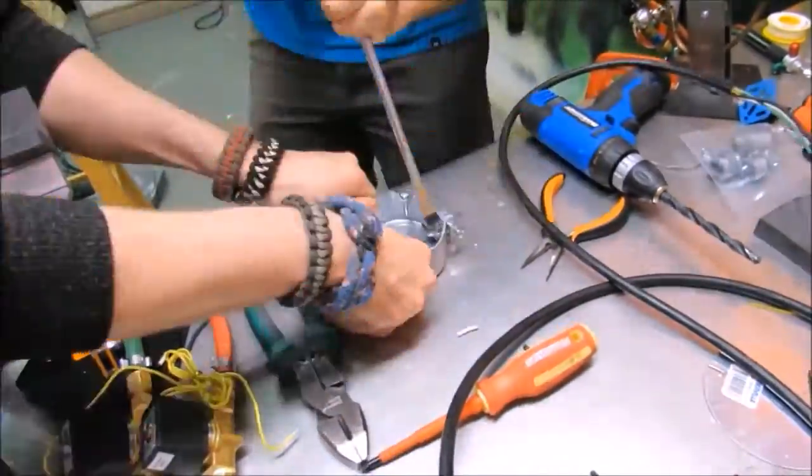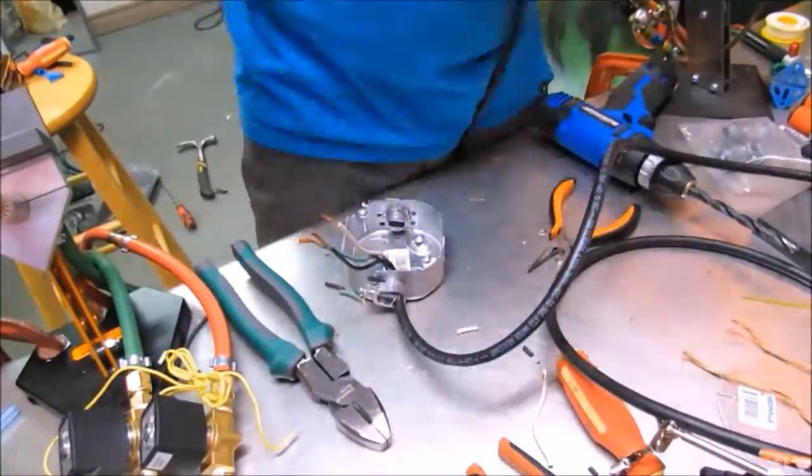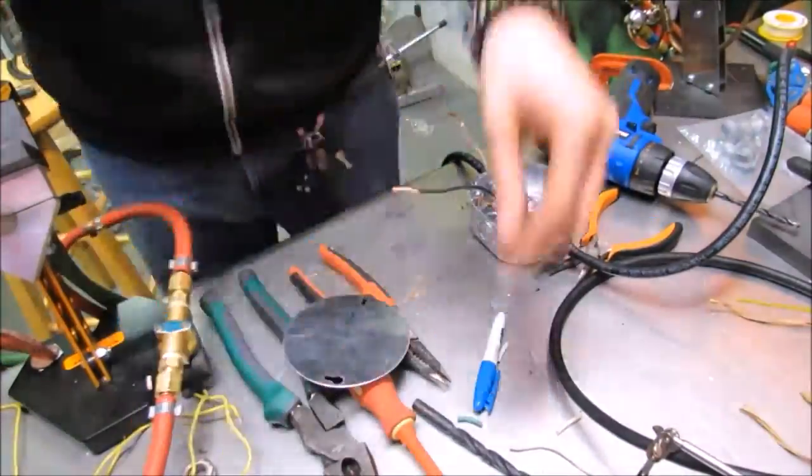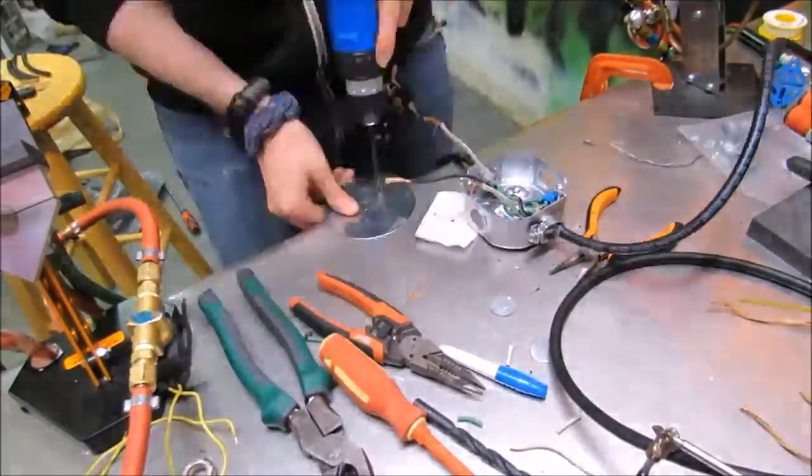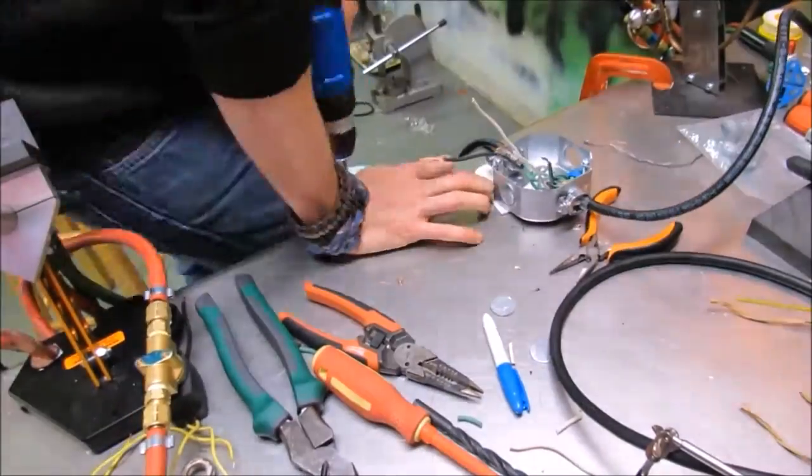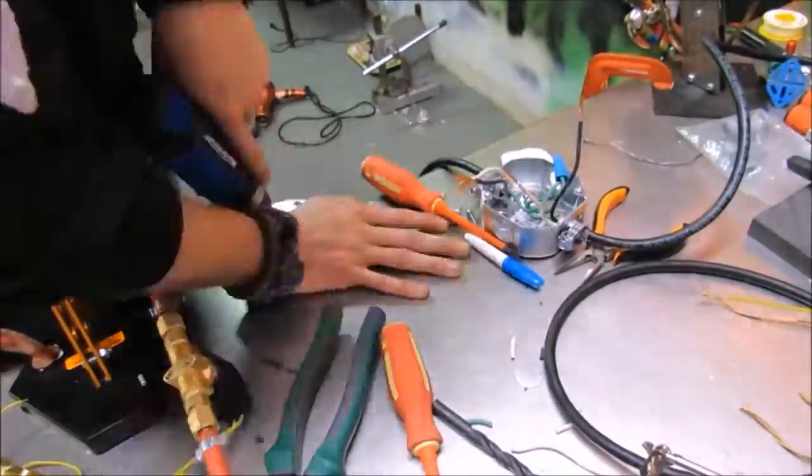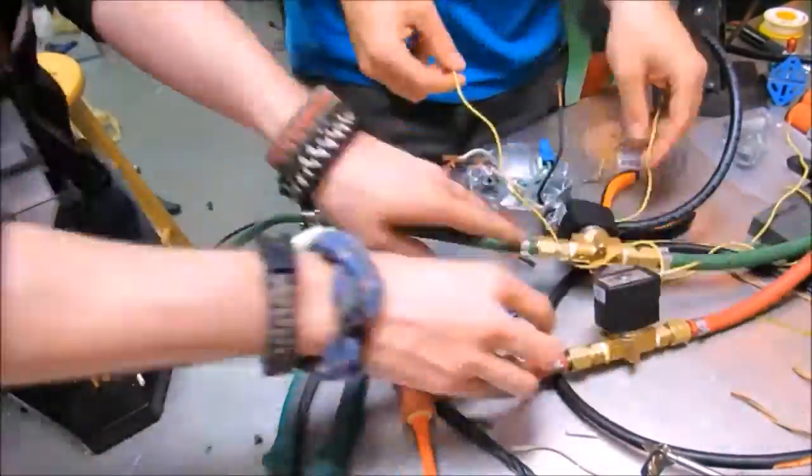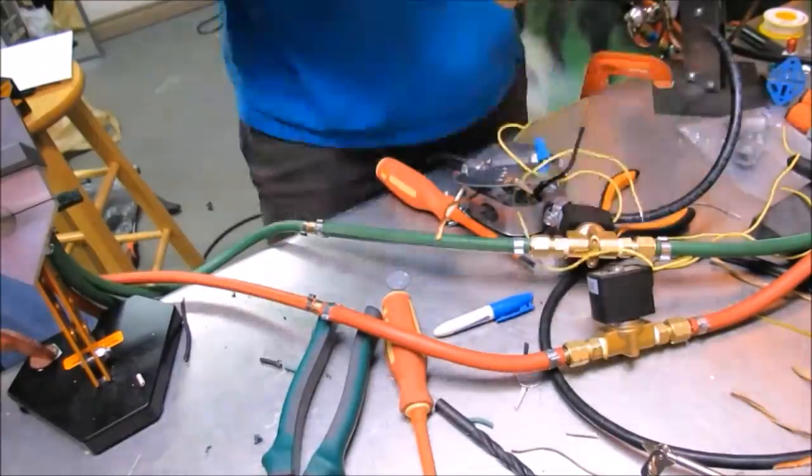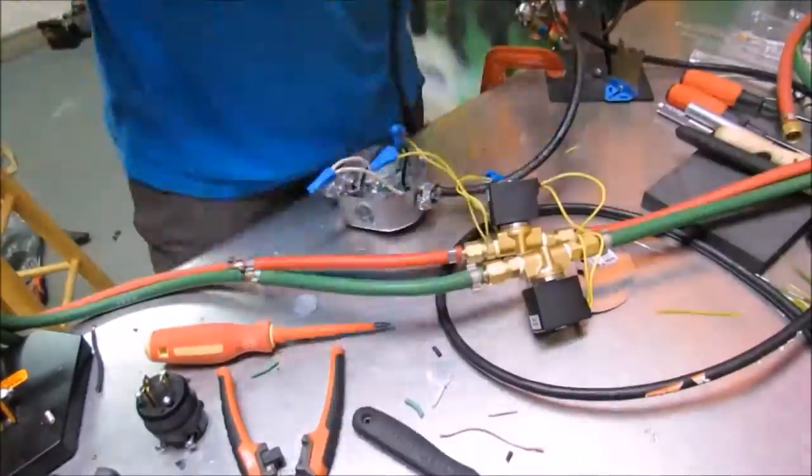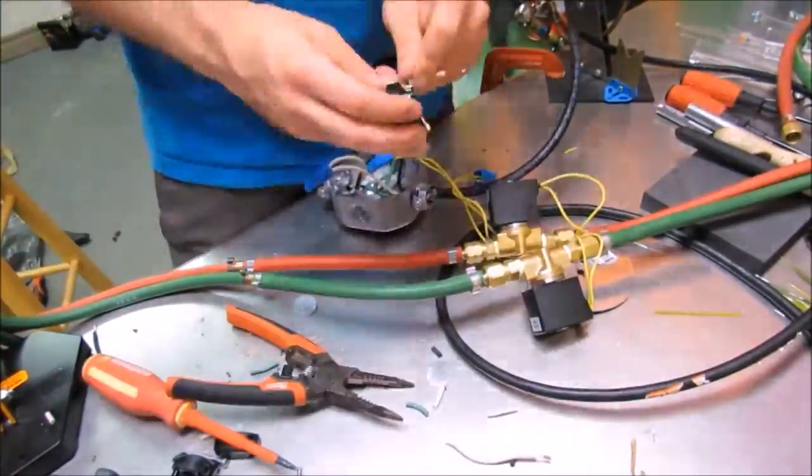Next, he wires up the electrical box. Now, I make a template with a piece of paper and a marker so we can drill holes in the electrical box cover to mount the solenoids. Finish wiring the solenoids in, and hook up the wall plug.